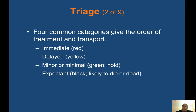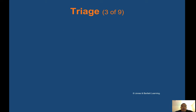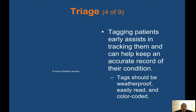Every patient gets a triage tag before you start treating — tagged red, yellow, green, or black. Triage tags should be waterproof, easily read, and color coded. Early tagging assists in tracking patients and helps keep an accurate record of their condition.